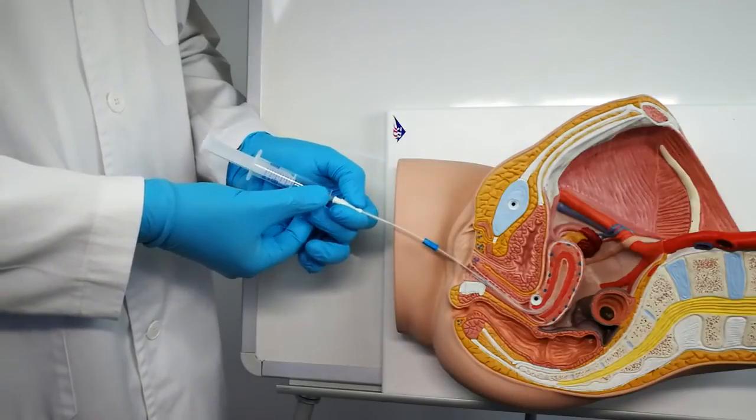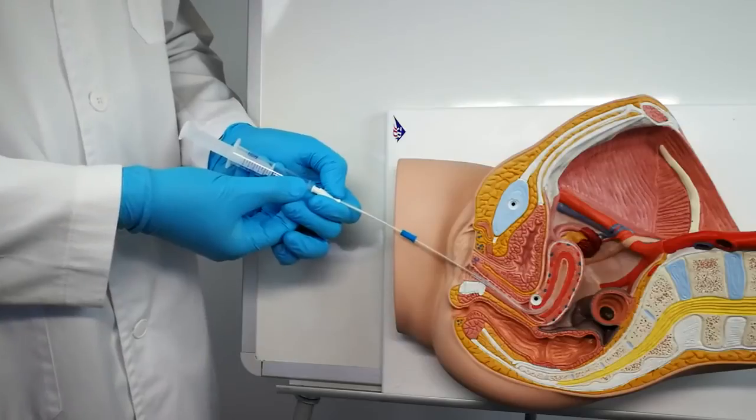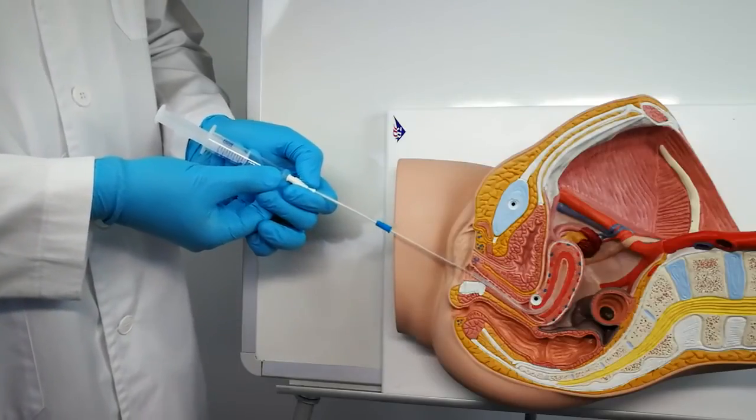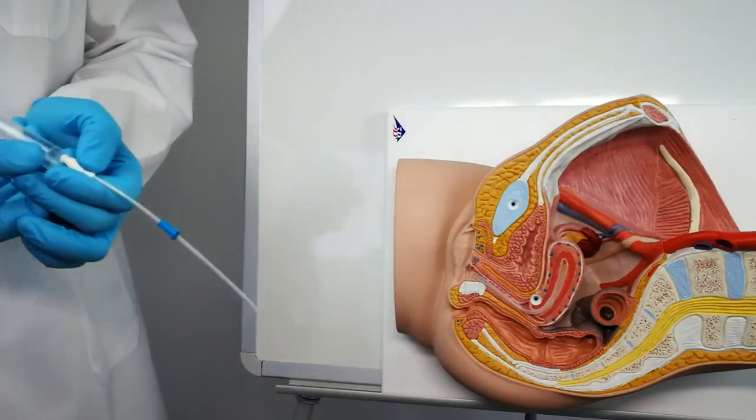Remove the catheter connected to the syringe, avoiding any contact with the vaginal walls. Clean the external surface of the catheter with a sterile gauze to eliminate cervical mucus.